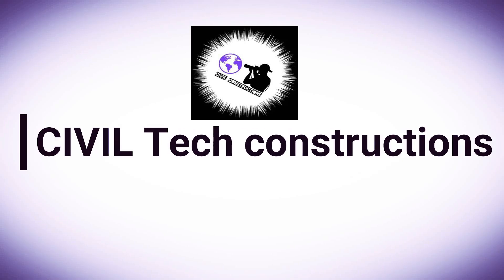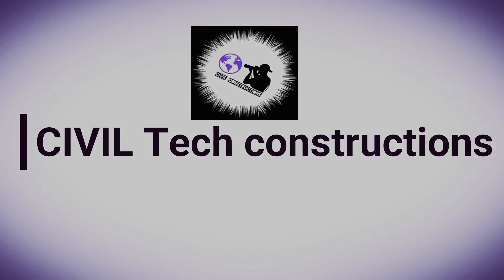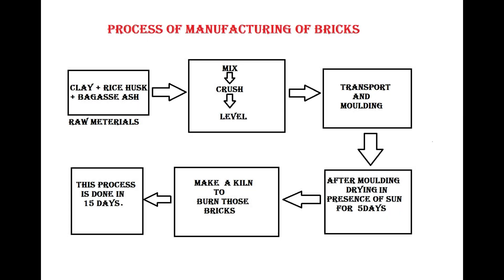Welcome to Civil Tech Constructions. This video covers the process of manufacturing of bricks. The flowchart shows: first, raw materials — clay, rice husk, and bagasse ash — are mixed, crushed, and leveled. Next comes transport and molding, followed by drying in the sun for five days, and finally a kiln to burn the bricks. This burning process takes 15 days.